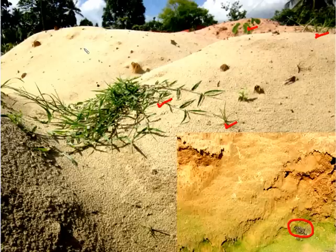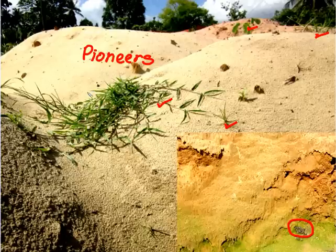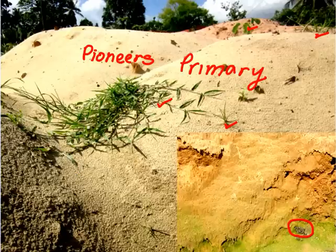These early colonizers we refer to as pioneers, and this process of life getting established in an area that never had life before is referred to as primary succession.